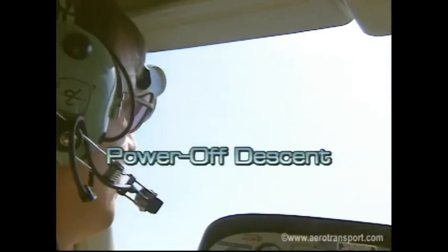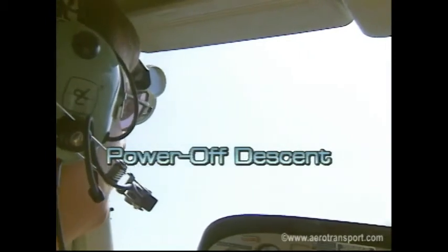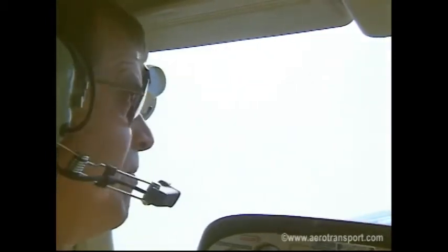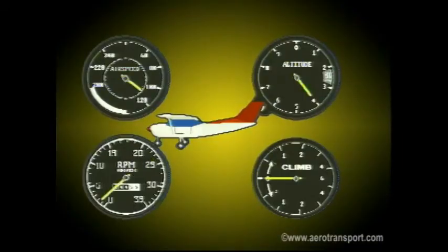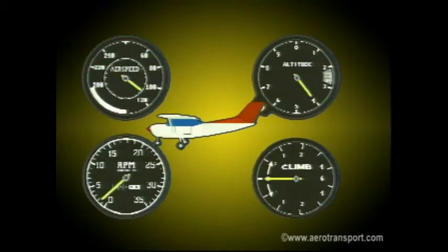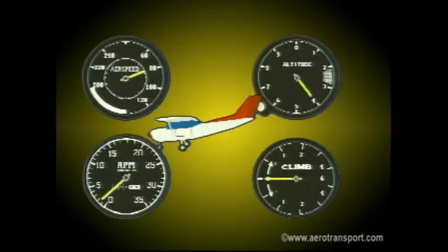Now you will be shown how to begin a power-off descent from straight and level flight. First, complete all cockpit checks and note the altimeter reading. Check the sky above and below for other aircraft. Reduce power, keep straight by using the rudder to counter the tendency of the aircraft to yaw right as the power decreases. Allow the airspeed to decrease, then assume the approximate attitude for the best glide airspeed and trim.